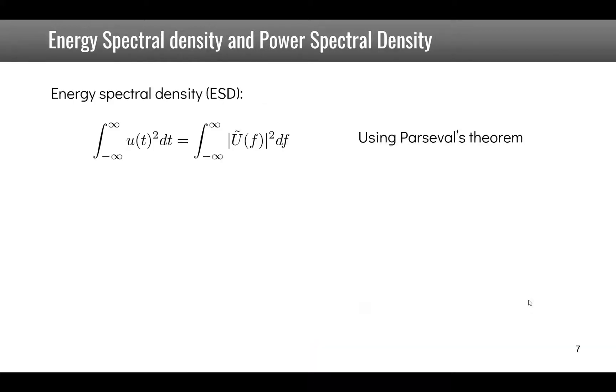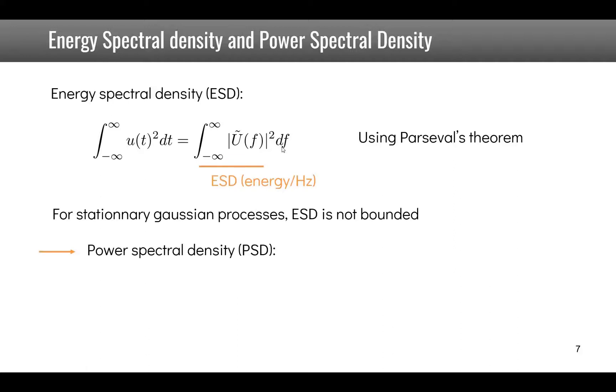To explain what is power spectral density, we may introduce energy spectral density. Energy is defined as the integral from minus infinity to plus infinity of u(t) squared dt, which using Parseval's theorem is equal in the frequency domain to the integral of the square of the Fourier transform times df.